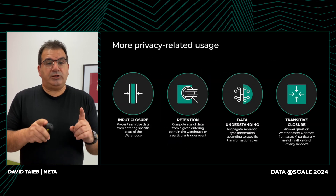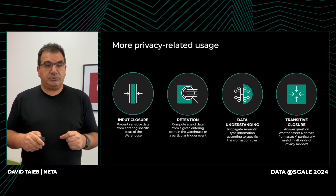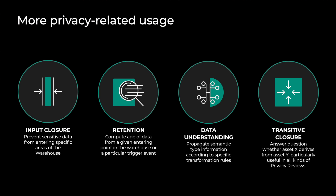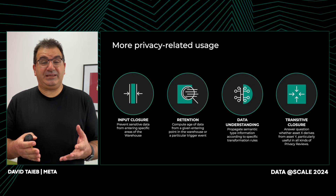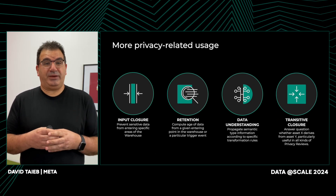Looking at more privacy-related usage: we talked about output closure, but there's also input closure when we want to prevent sensitive data from entering specific zones. There's retention, data understanding to follow the graph and propagate semantic annotations, and transitive closure when we want to answer whether asset X relates to asset Y even though they are very far apart. Privacy is only one use case that benefits from the data graph. Let's now look at how the data graph can also benefit security.